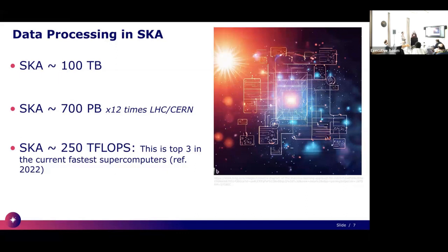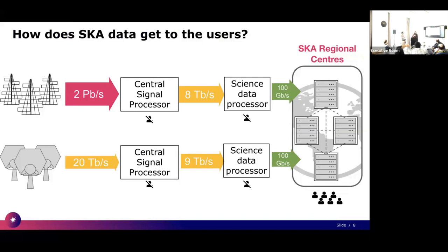These two telescopes fall under one observatory headquartered at Jodrell Bank in Cheshire. The scale of data: every second we'll be capturing 10 times global internet traffic; a typical observation will be 100 terabytes — roughly 12 times the LHC at CERN. The compute required needs one of the top three fastest supercomputers in the world. In the pipeline schematic, the 100,000 antennas produce 2 petabytes per second, which goes into a signal processor and gets averaged down, then through the science data processor, and finally into SKA Regional Centers — that's the bit users interact with.